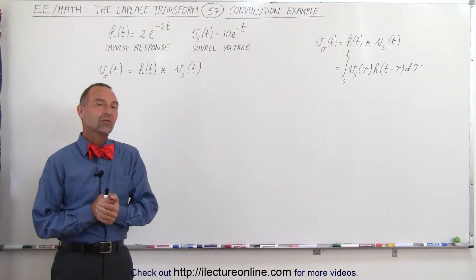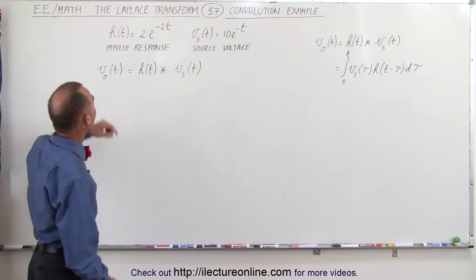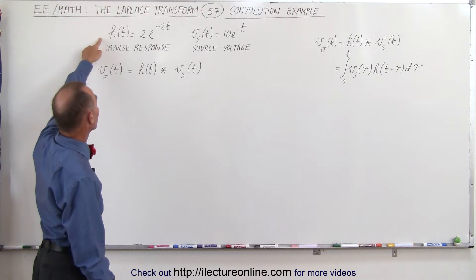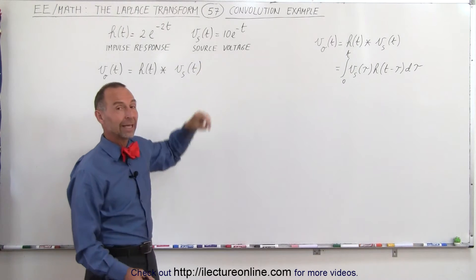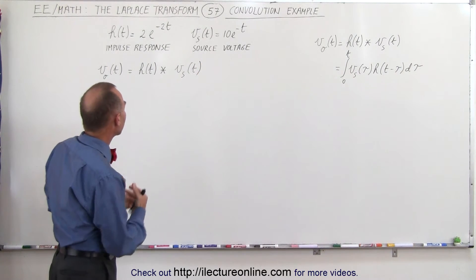Welcome to ElectronLine. Let's do another example of the convolution. Here we have two functions. We have the impulse response, let's say of a circuit, and we have the source voltage to the circuit, and we're interested in the output voltage. What will we get on the output voltage?